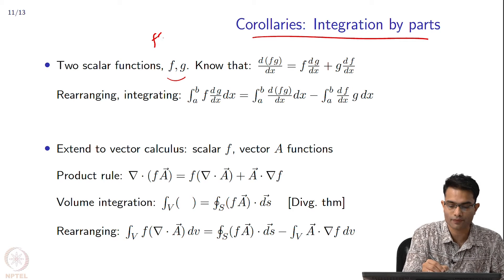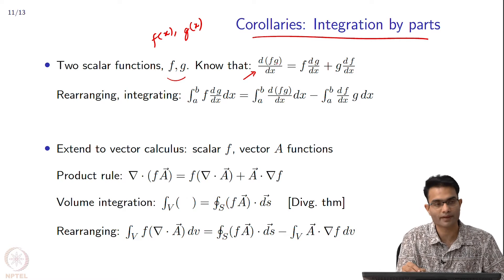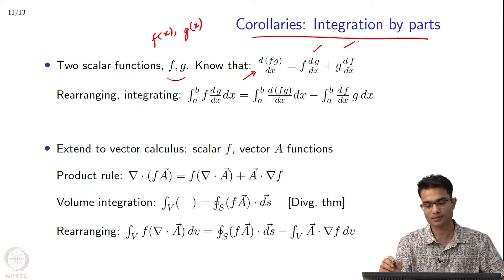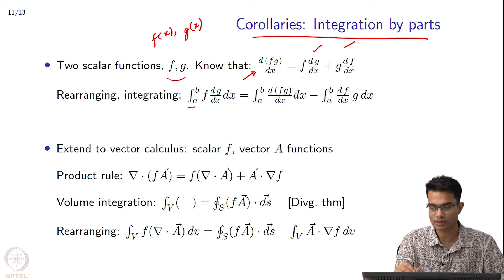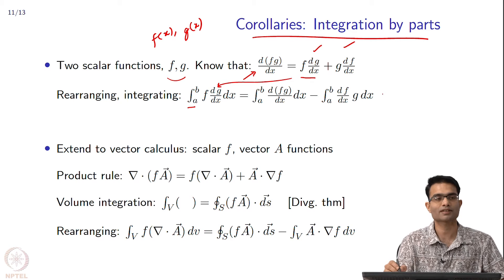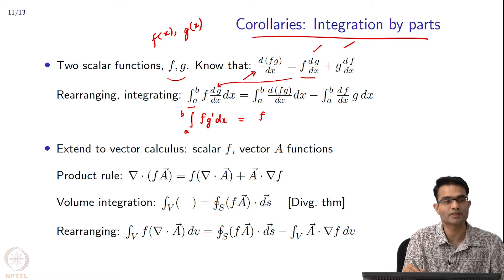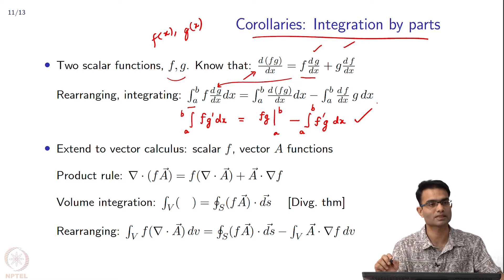Let us take two functions f(x) and g(x), two simple functions of one variable. Applying the product rule, the derivative of fg is f times the derivative of g plus g times the derivative of f — two terms everyone knows. If I integrate from a to b and rearrange terms, this is your integration by parts: the integral of f g-prime dx, which equals fg evaluated at a and b, minus the integral from a to b of the derivative of the first function times the integral of the second function dx. Everyone saw this in high school.